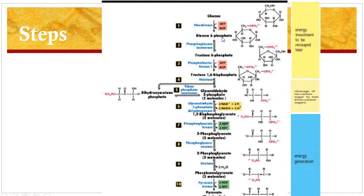In the second step, this glucose-6-phosphate is isomerized to produce fructose-6-phosphate. In the third step, fructose-6-phosphate is further phosphorylated to fructose-1,6-bisphosphate, which has 2 phosphate groups. Fructose-1,6-bisphosphate is formed in the presence of the enzyme phosphofructokinase. This is the rate-limiting step of the glycolysis pathway because it is the slowest reaction. Here also, ATP is broken down to ADP and this is an irreversible reaction.